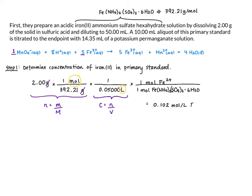This gives us 0.102 moles per liter. I'm going to keep the full number in my calculator — 0.101986 — but will write the abbreviated answer. So now that I know the concentration of my iron(II), I can solve for the concentration of my permanganate.